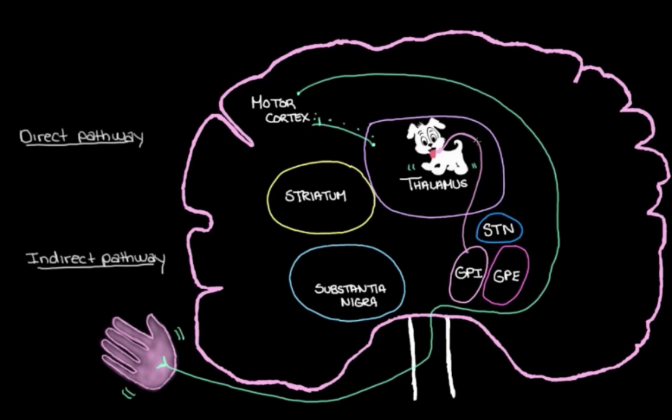So we keep our thalamus on a tight leash. So this is what we do. And we do this so it can't overexcite the motor cortex. And the basal ganglia, their job is to adjust the length of our leash. And this adjusts how active the thalamus can be. And they do this by talking to each other in the direct and the indirect pathways.